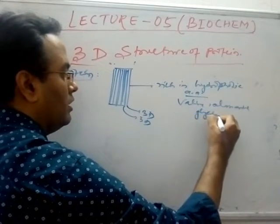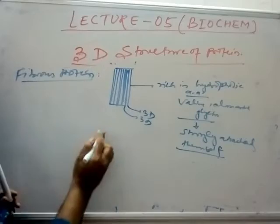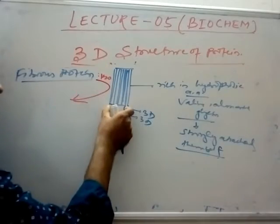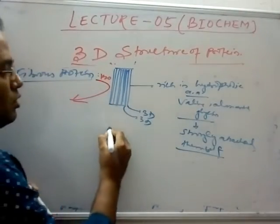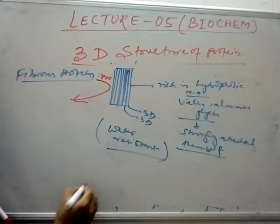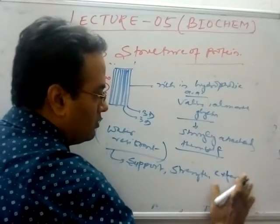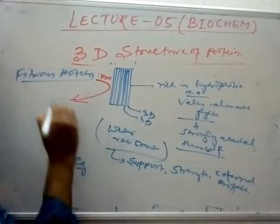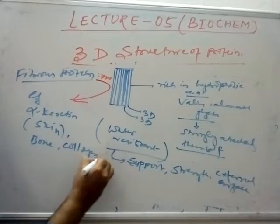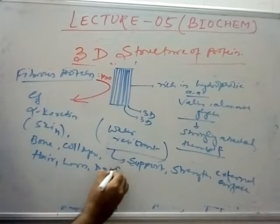These fibrous structures are tightly packed so that water molecules cannot pass through. They are water-resistant and provide support and strength on external surfaces. Examples of fibrous proteins include alpha-keratin, which is present in skin, hair, horn, and hoof, and collagen.